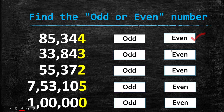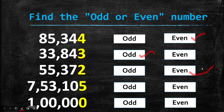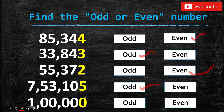Here are the answers. 85,344 — the ones place is 4, so it's an even number. 33,843 — the ones place is 3, so it's an odd number. 55,372 — the ones place is 2, so it's even. 7,53,105 — the ones place is 5, so it's odd. And 1 lakh — the ones place is 0, and 0 is even, so the answer is even.